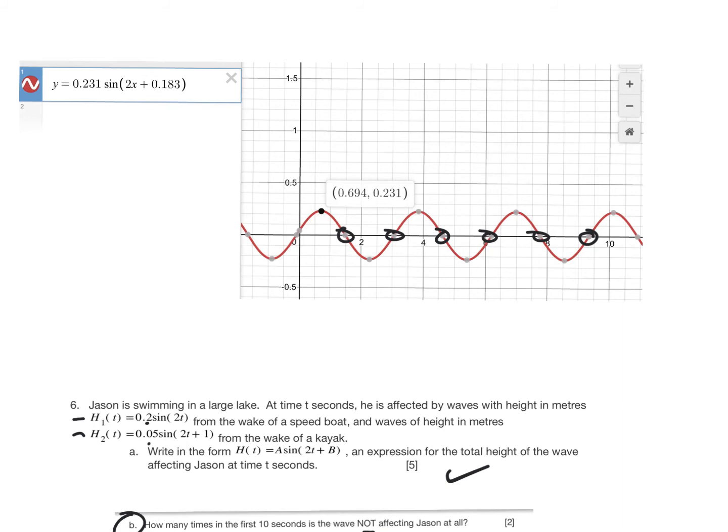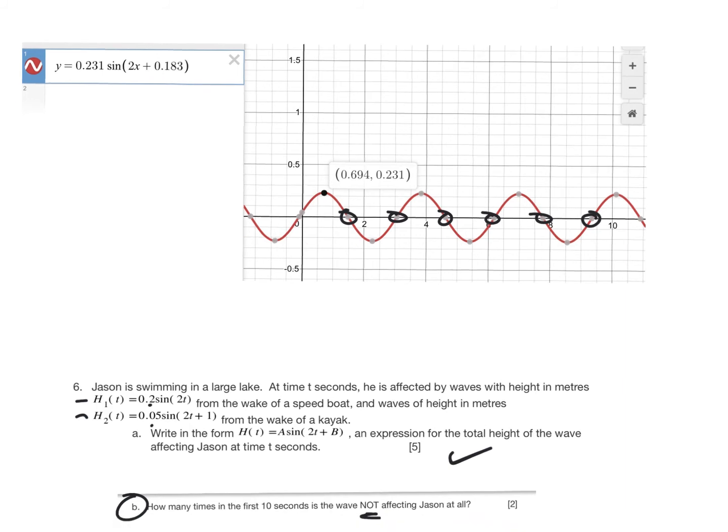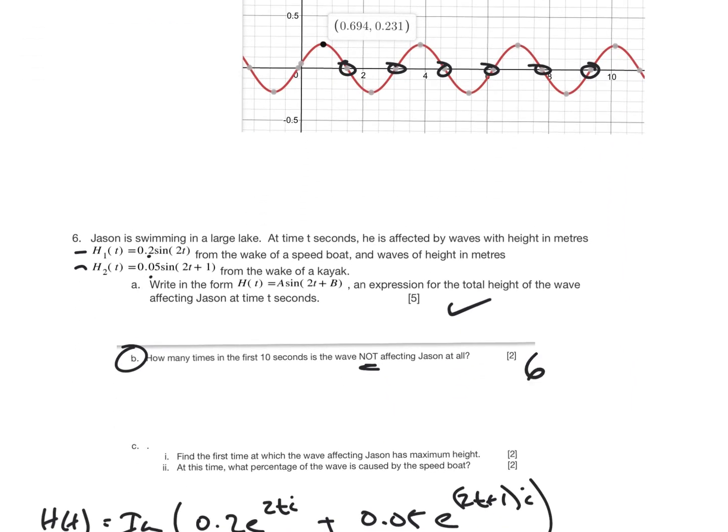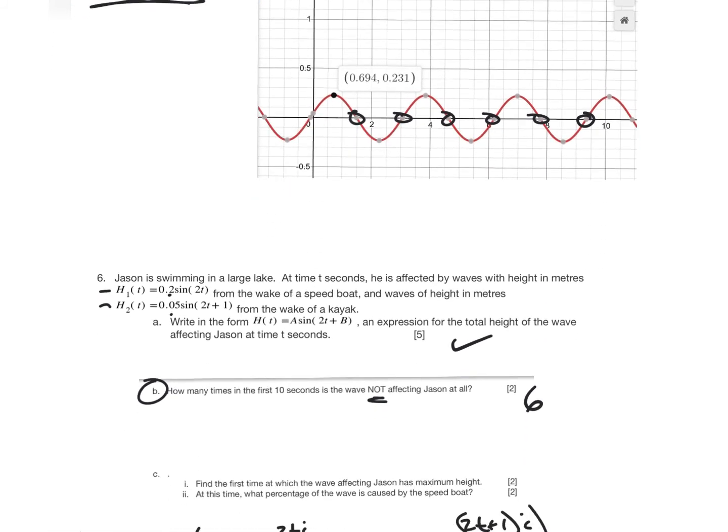If I look closely at 0, it doesn't go through 0. So there's 1, 2, 3, 4, 5, 6 of them. So it's just 6. Recognizing you just look at the graph, which I've sketched, and work from there.